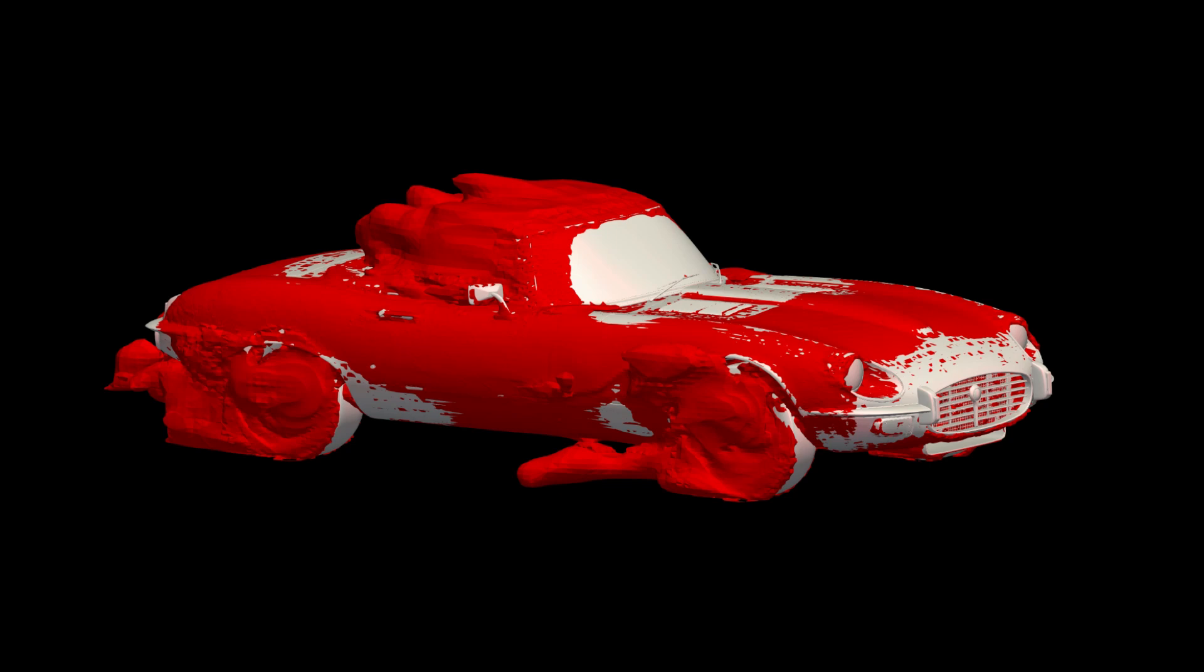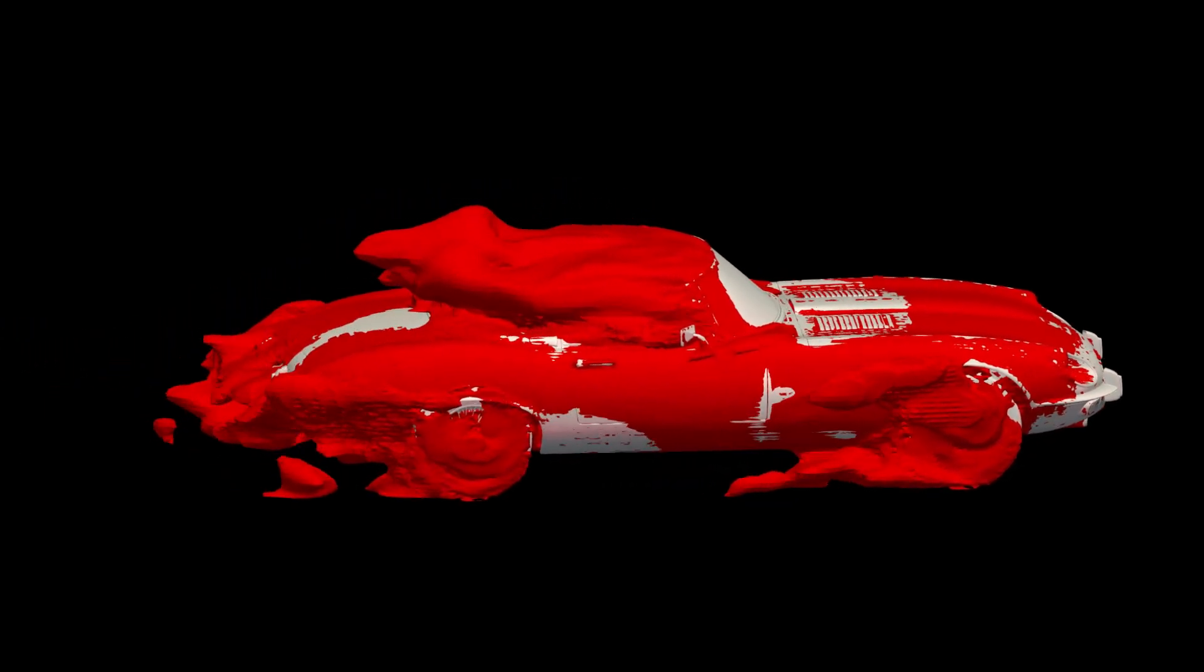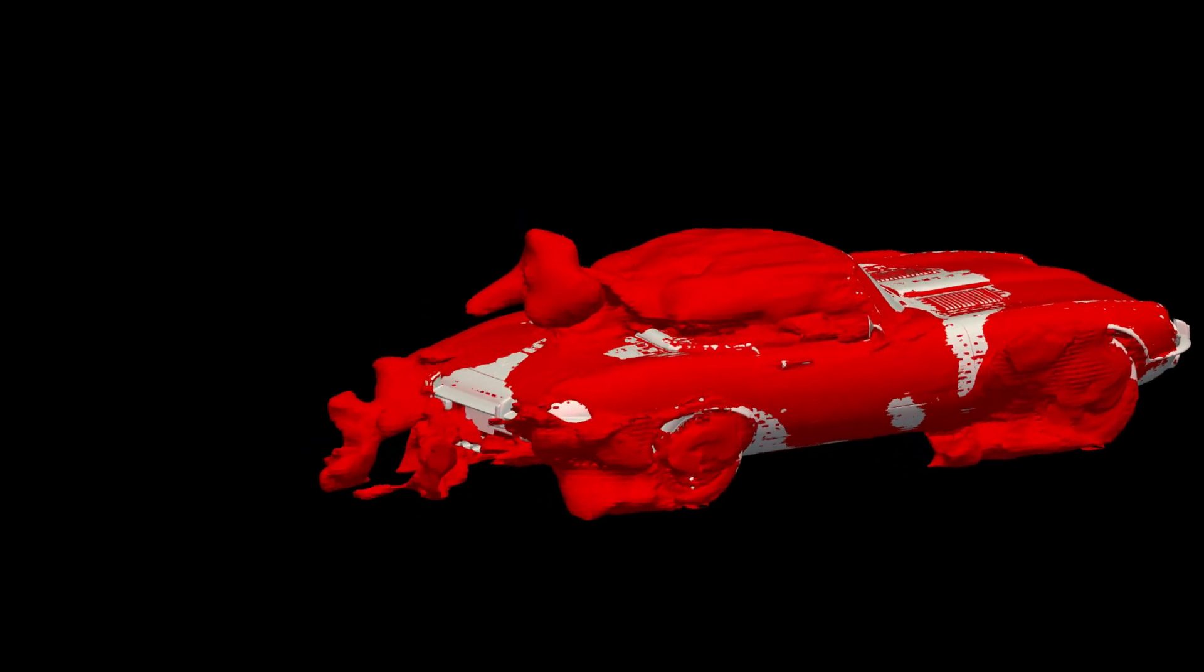Looking at the drag, the cabin is definitely the major contributor to the drag and overshadowing really everything else combined. The rear is actually very respectable with even less drag than the wheels.